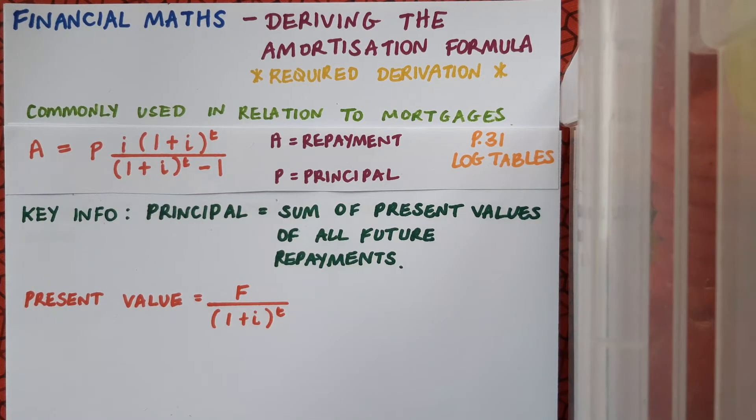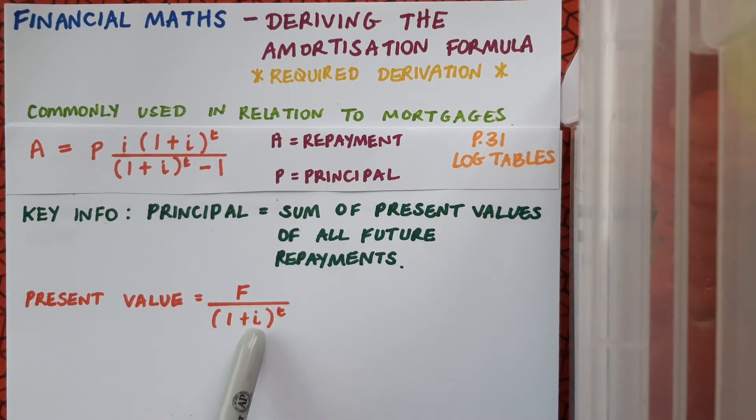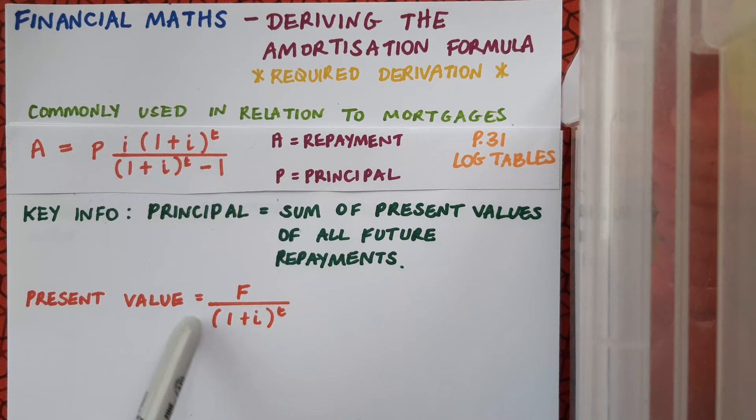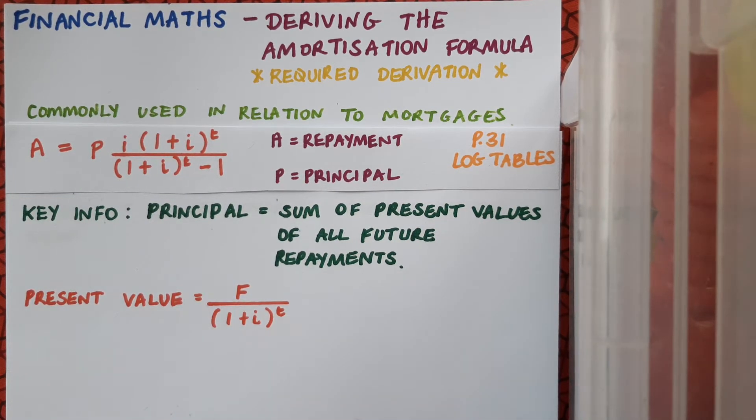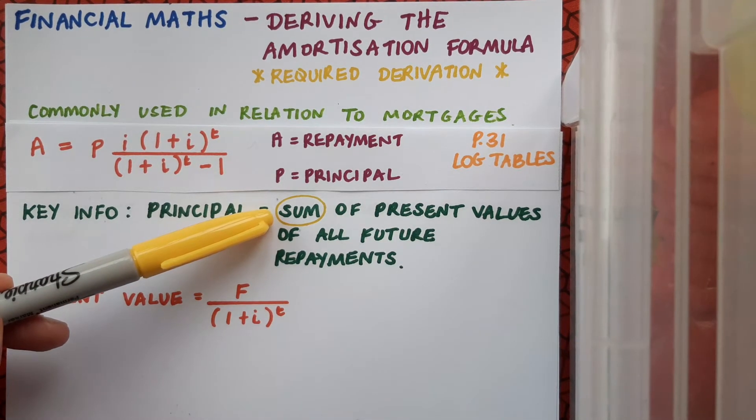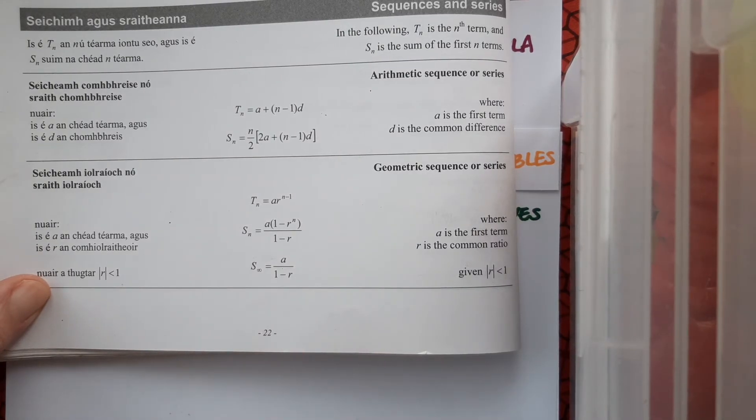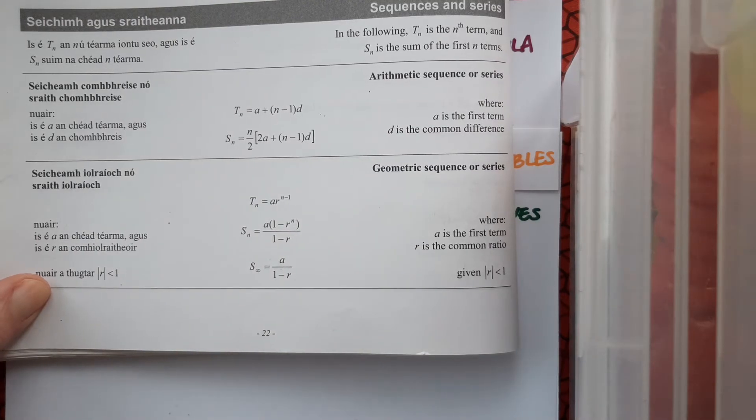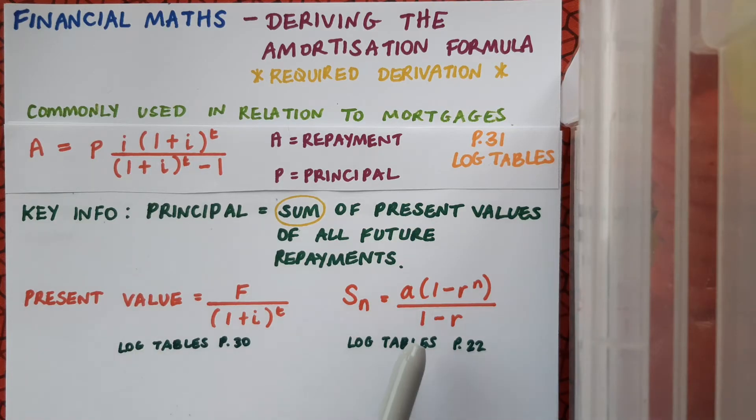Now I know that all of these future payments are the same, so the F isn't going to be changing, and the interest rate won't change over the duration of the loan either, so I is going to stay the same. All that will be changing is the T. And since I'll be adding a load of these up, and all that will be different from each one to the next is the T value, then I'm going to be looking at a geometric series. And I'll be trying to find the sum of that geometric series. So we'll be back to the log tables again on page 22 this time, and we'll be looking at Sn for a geometric series.